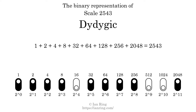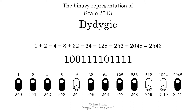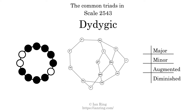The scale number not only enumerates the scale with a unique index, but it also literally describes the tonal content of the scale. Represented as a binary number in base 2, the scale number is 1, 0, 0, 1, 1, 1, 1, 0, 1, 1, 1, 1.